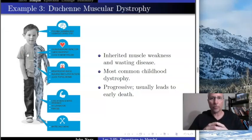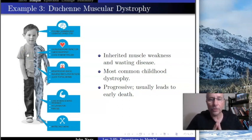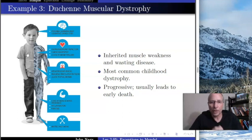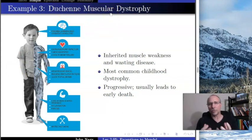Here's our third example of a trait in human beings that violates Mendel's principle. It's a disease called Duchenne muscular dystrophy, and it's the most common form of muscular dystrophy. Muscular dystrophy is a really nasty disease.